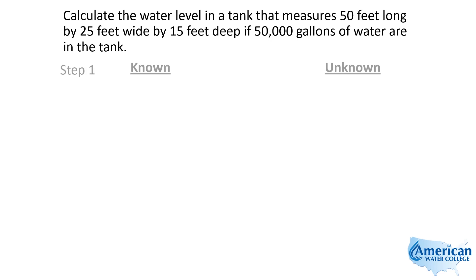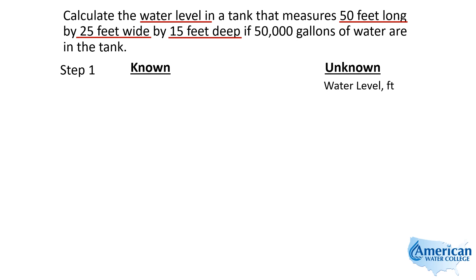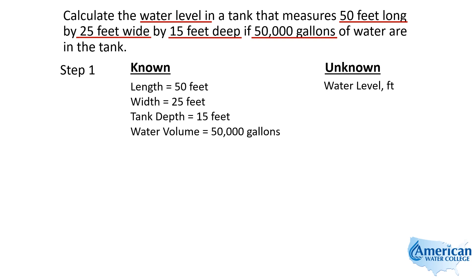Using the five-step approach, Step 1 has us pulling the numbers and the units out of the problem — we write down our known and unknown information. They want us to calculate the water level in the tank, so we write that down: we're looking for the water level in feet. They tell us the dimensions: 50 feet by 25 feet by 15 feet deep. Keep in mind they'll give you information you don't necessarily need — the 15-foot depth isn't necessary because the tank isn't totally full. We're really only interested in the width and the length. They also told us there are 50,000 gallons in the tank, so we write all that down. That is Step 1.